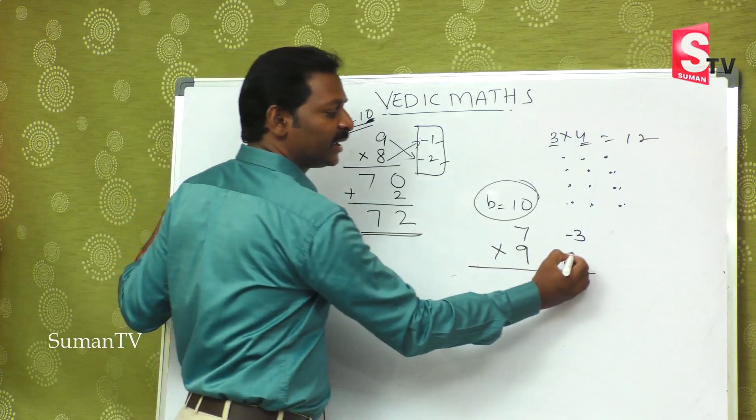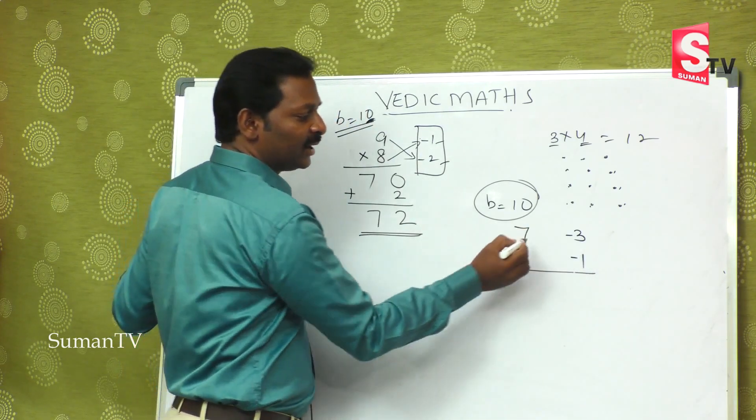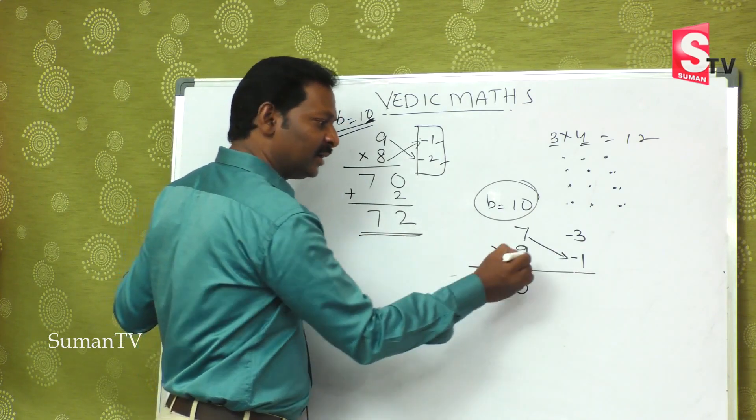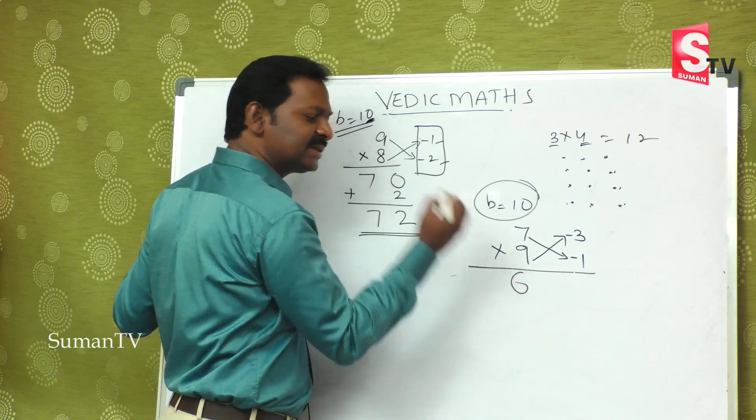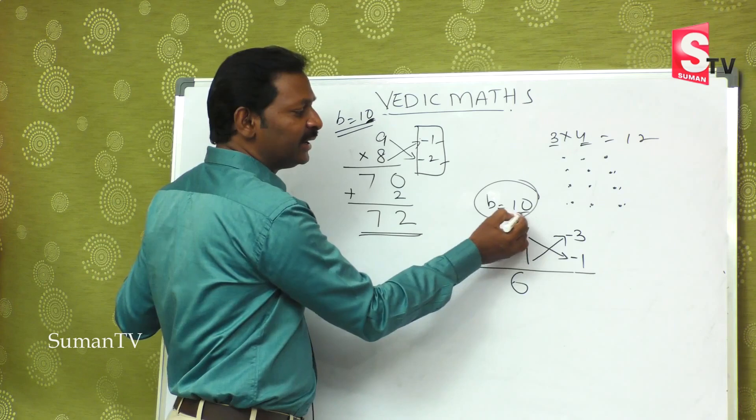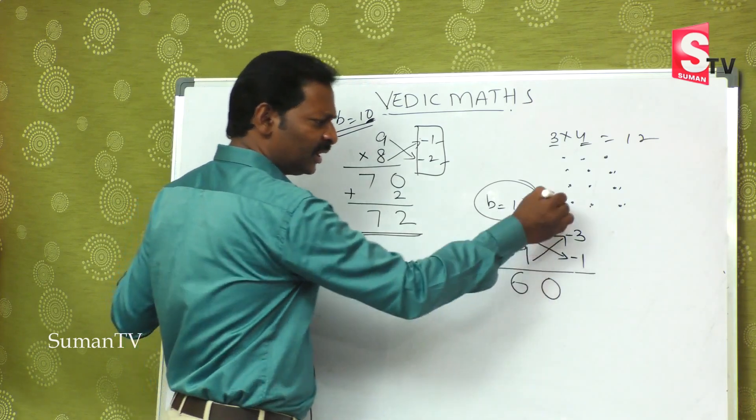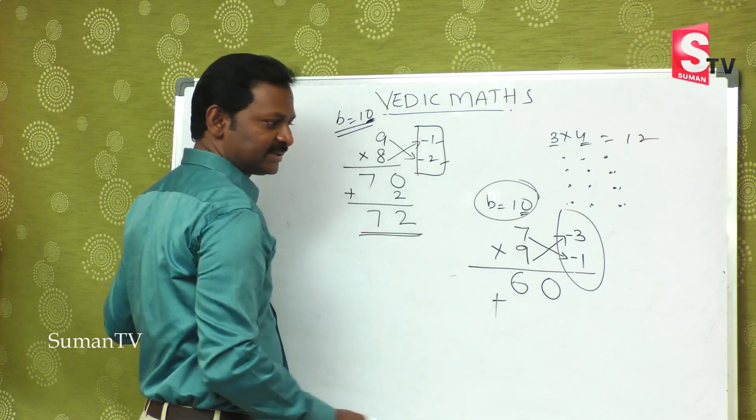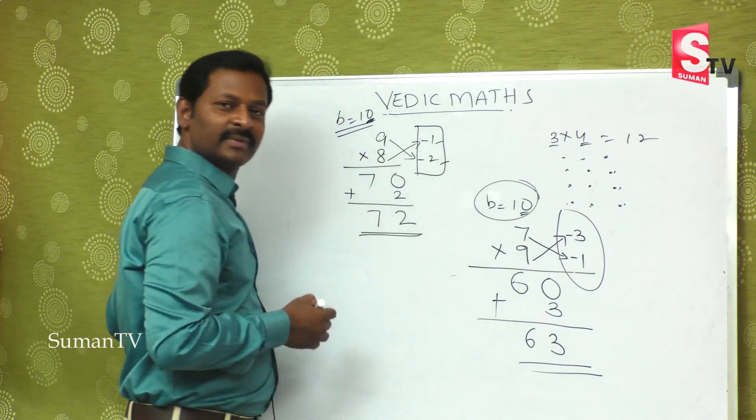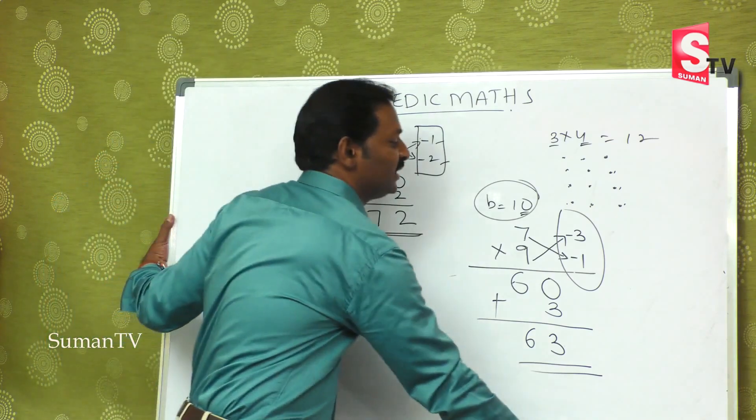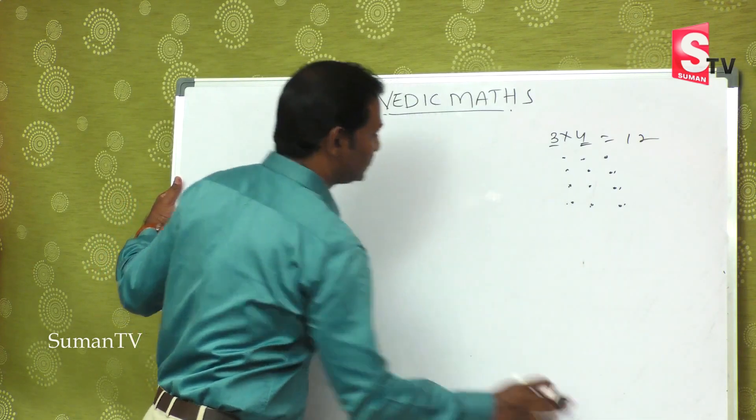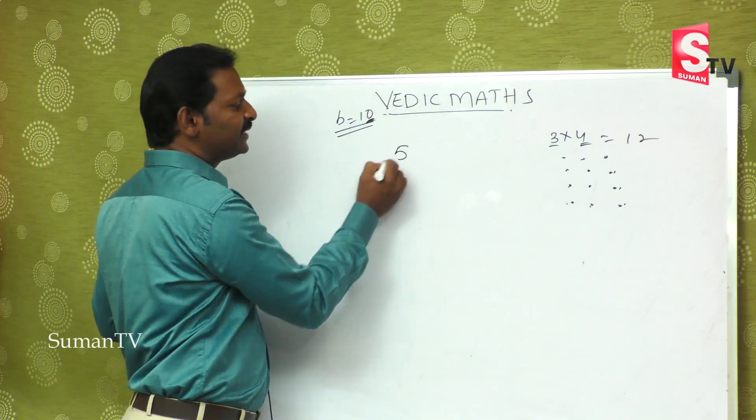7 is close to 10, 9 is close to 10. So 7 and 10 minus 3. And then minus 1. 7 minus 1 that is 6. 9 minus 3 is 6. Definitely okay.